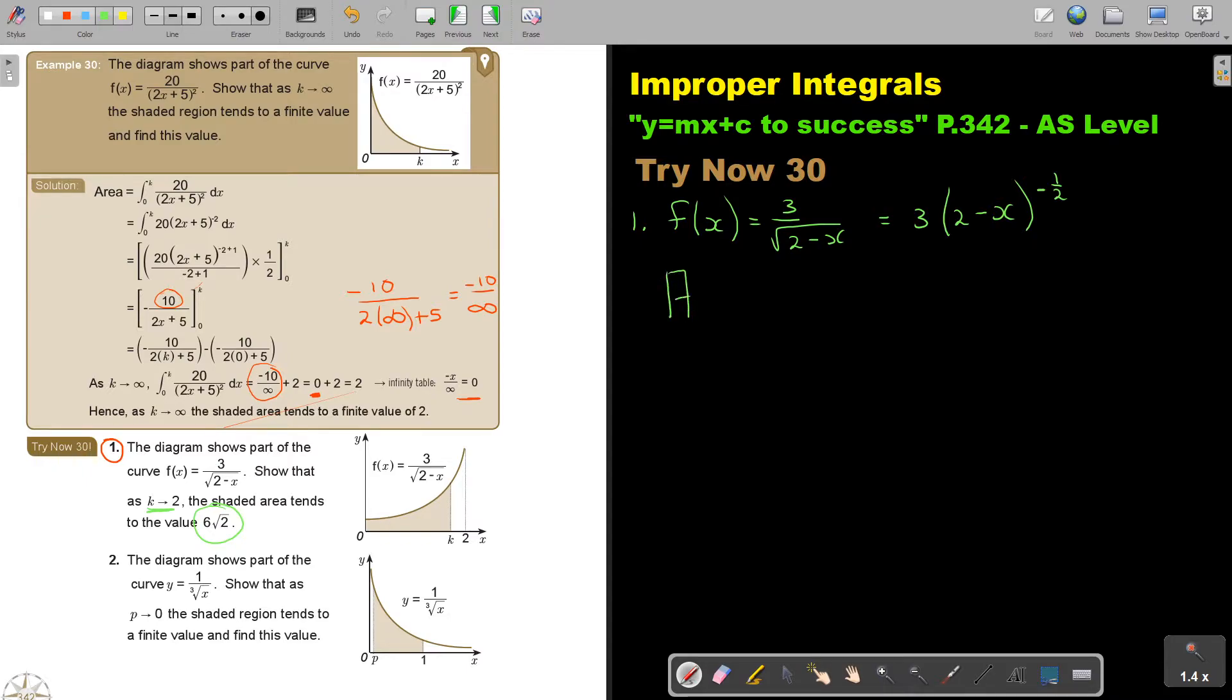So the area will be K and 0. This is my function. So I'm going to integrate. Remember, there's a 1. So it's negative 1. So it's going to be 3. That's just a concept. It's multiply 1 over negative 1. You can put it at the back or here. It doesn't matter. And then it's 2 minus x. And then it's K and 0.